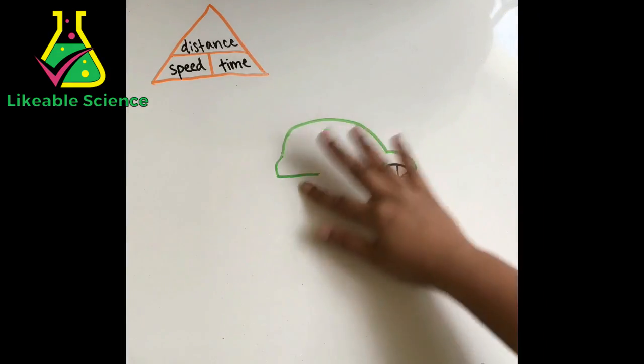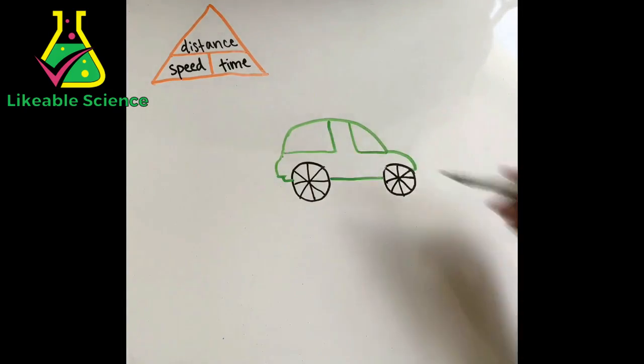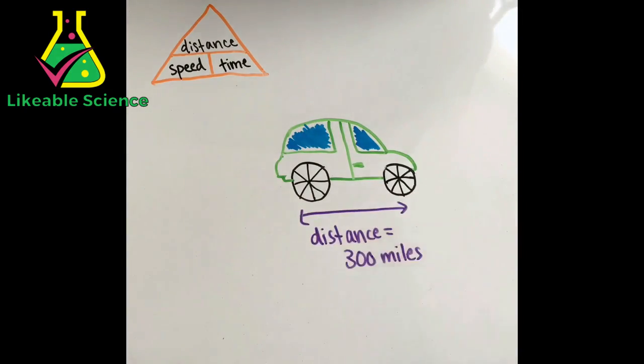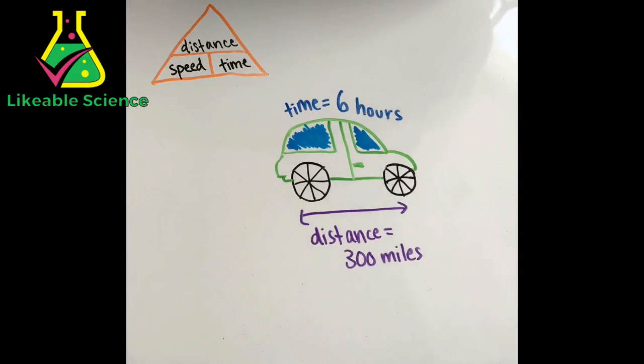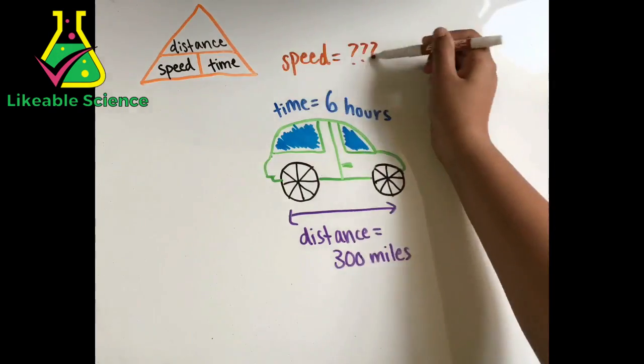We know all of our equations, so let's solve some problems. A car is on the highway. It drives 300 miles over the course of six hours. What is the car's average speed?